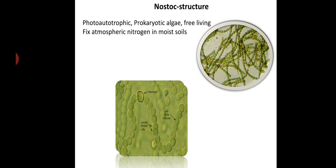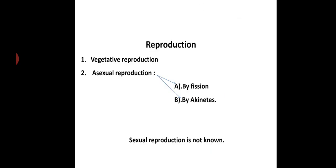Structurally, these Nostoc appear to be like filaments. They are photo-autotrophic, prokaryotic, free-living algae. They fix atmospheric nitrogen in moist soil. They reproduce vegetatively and asexually. Sexual reproduction is not known.